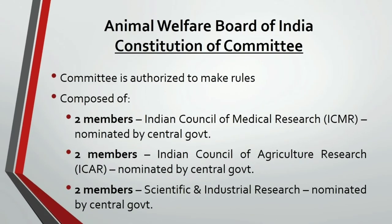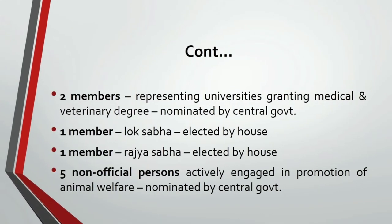Now let's see the composition of this committee. It is composed of various people, which includes two members from ICMR (Indian Council of Medical Research), two members from ICAR (Indian Council of Agriculture Research) — you can remember these by just exchanging the terms 'medical' with 'agriculture' — and two members from scientific and industrial research. All these members are nominated by the central government. The committee also includes two members from universities granting medical and veterinary degrees, who are also selected by the central government and not by the universities.